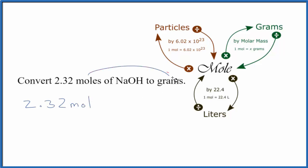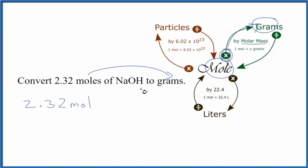We're going from moles to grams, and we're going to multiply by the molar mass — that's our conversion factor. To find the molar mass of sodium hydroxide, we look up the atomic mass for each element and add those together.